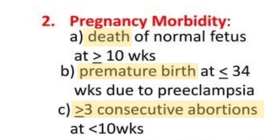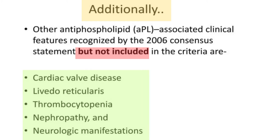For pregnancy-associated morbidity, any one of the following must be present: death of a normal fetus after 10 weeks of gestation, premature birth before 34 weeks due to preeclampsia, or greater than three consecutive abortions. If any of these are present along with positive antibodies, the diagnosis of antiphospholipid antibody syndrome can be confirmed.